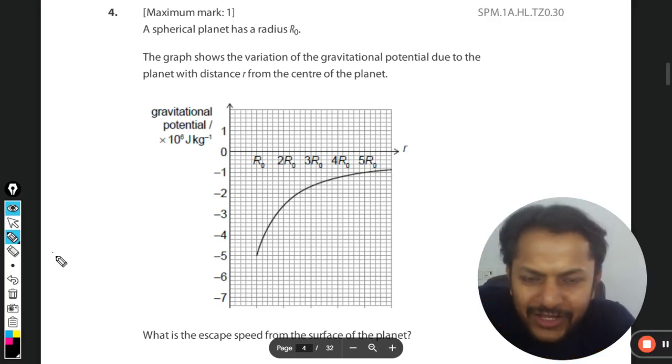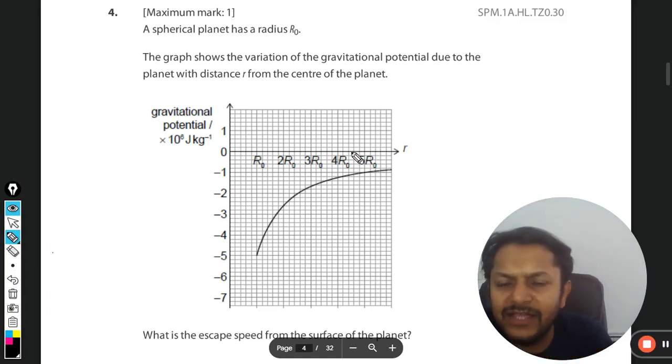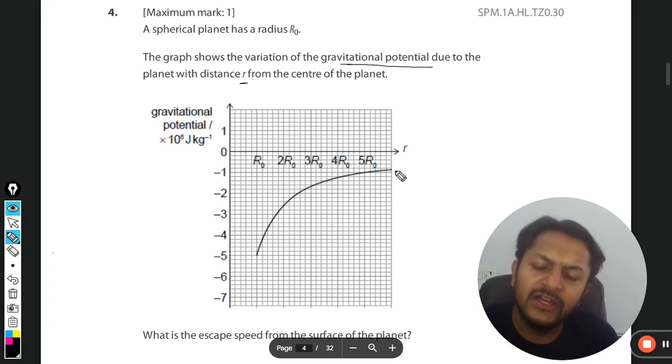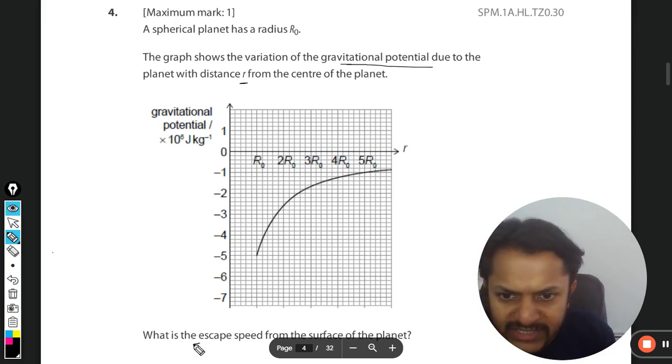Okay dear student, let's see what is there in this question. A spherical planet has a radius r naught. The graph shows the variation of gravitational potential due to the planet with distance r from the center of the planet. So the variation is there, it was clear from the topic itself. In the theory classes we have done this that the graph will be looking like this. Let's see what is the escape speed from the surface of the planet.